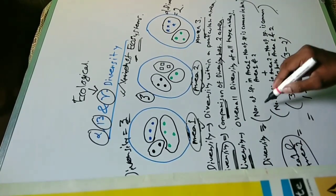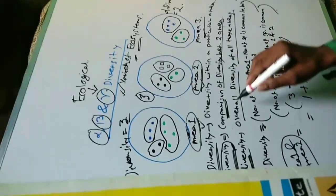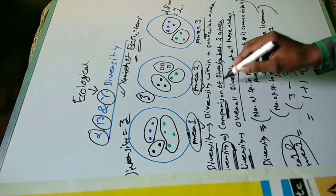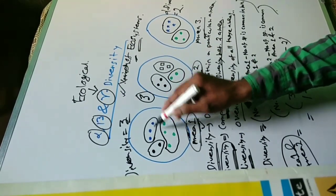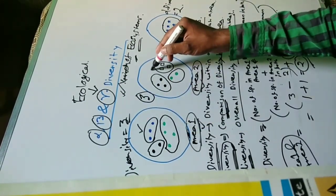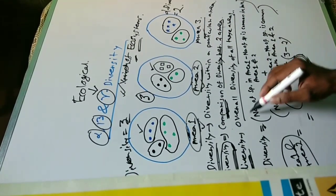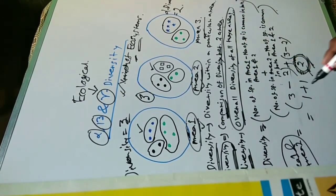You can also calculate beta diversity without using this formula — simply by comparing two areas and counting how many species are different. In area 1 and area 2, this one and this one are similar, this one and this one are similar, but this one and this one are different. So beta diversity is 2.